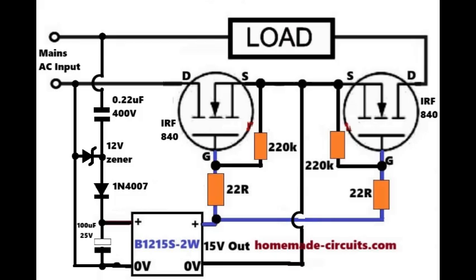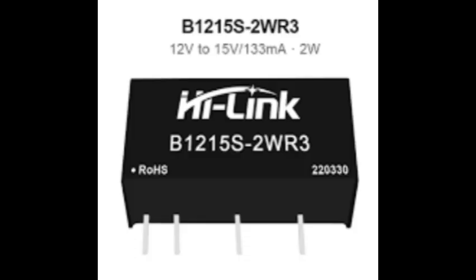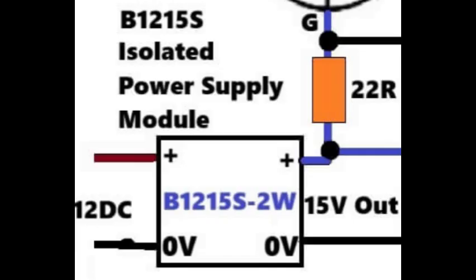That is why we use AB1215S, 2W isolated DC-DC converter. This small module gives us an isolated 15 volt output. And this isolation allows the gate voltage to float along with the MOSFET source.